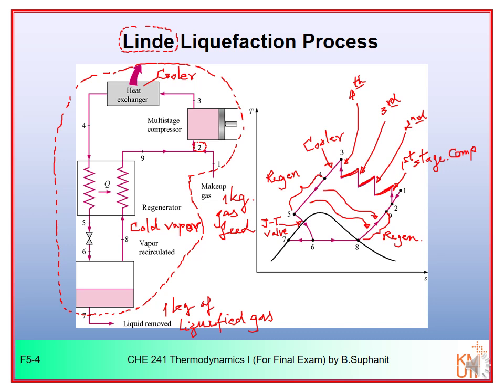The cycle on the TS diagram uses a four-stage compression system in this specific example. In industry, the Linde liquefaction process is normally used — the real industrial process may be more complex. We can use the Linde process to liquefy methane, oxygen, nitrogen used in the lab, and other light gases.